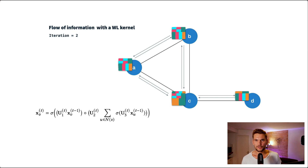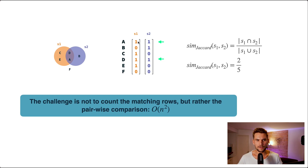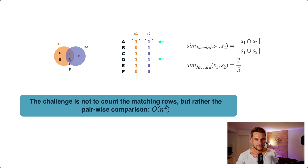HashGNN uses a technique called minhashing, which belongs to the family of locality sensitive hashing techniques. Minhashing is defined on sets and estimates the Jaccard similarity of two sets without comparing them directly. Each set can be encoded as a binary vector. The Jaccard similarity of two sets is the intersection size over the union. In our small example, set one and set two overlap in elements a and d, so the intersection is two and the union is five, giving a Jaccard similarity of two over five.